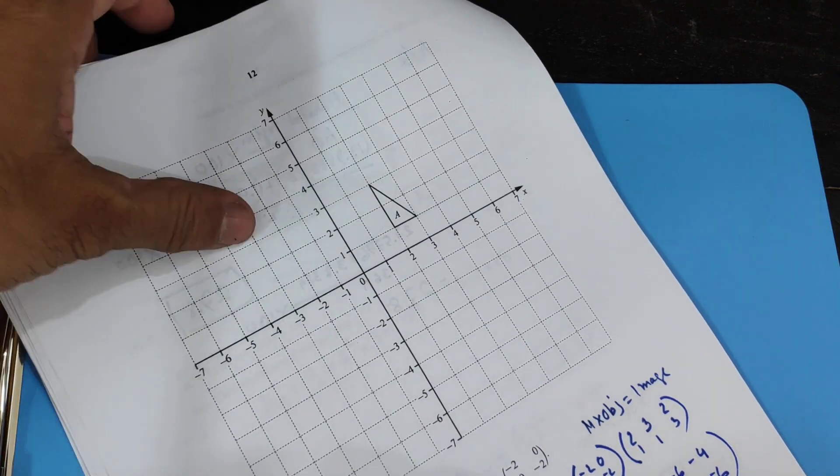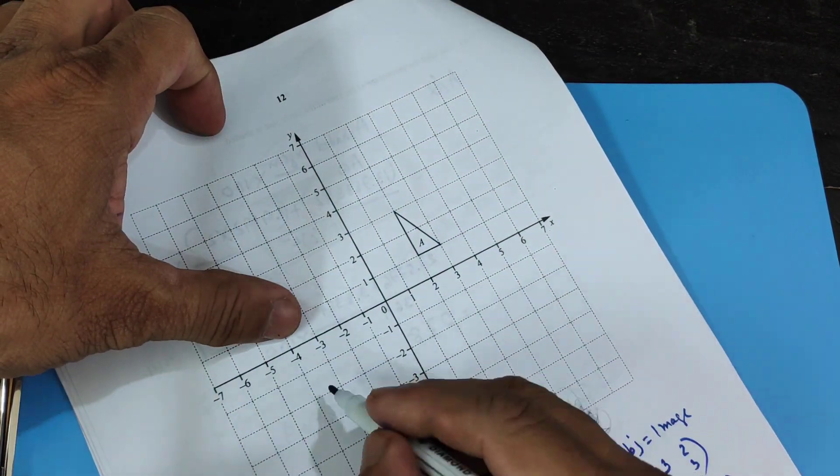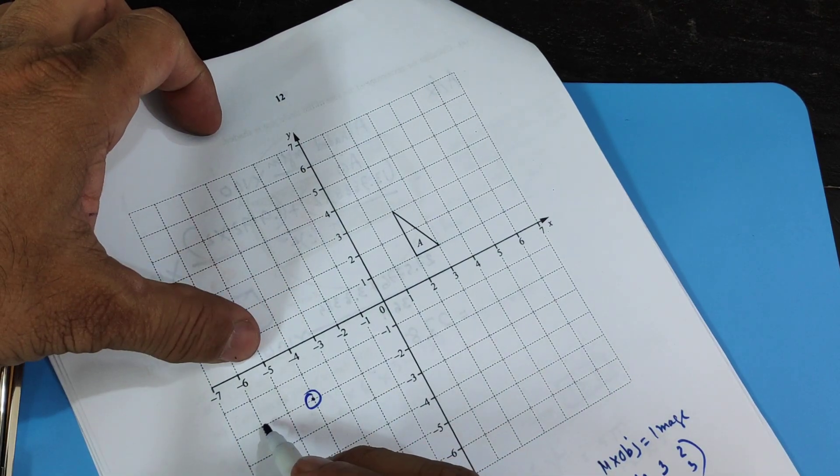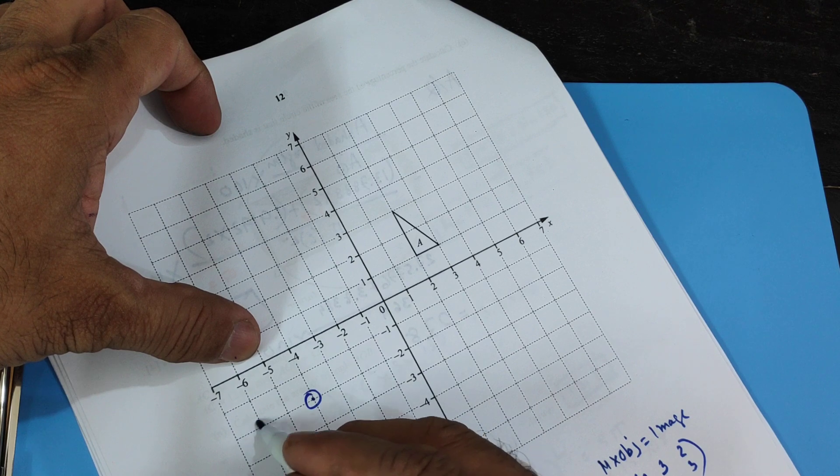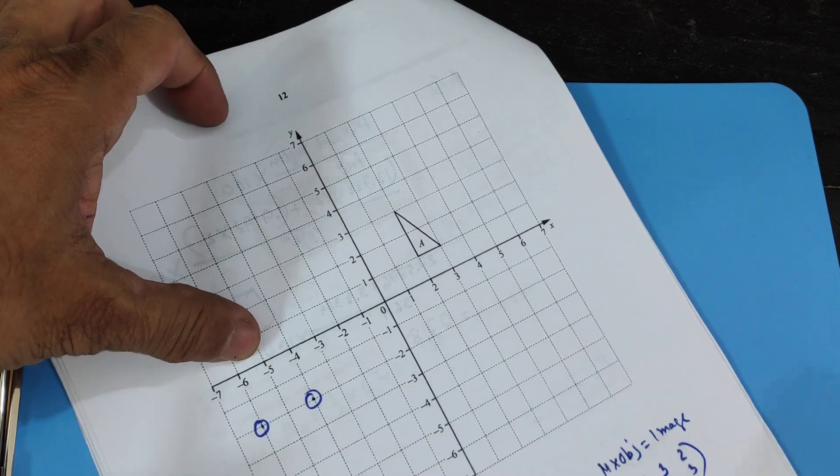So what I'm gonna do, I'm gonna put it over here. Minus four, minus two right over here, and then minus six, minus two right over here, and minus four, minus six right over here.